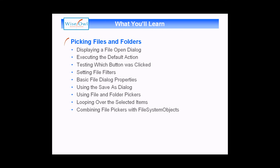We'll start with how to use the basic file open dialog box, how to display it on screen and execute its default action which is to open up a file. We'll then show you how you can test which button was clicked on the dialog box so if the user clicks open or cancel you can do different things accordingly. We'll also explain how to set your own file filters so you can control what file types users are allowed to work with.